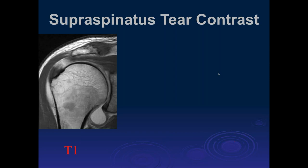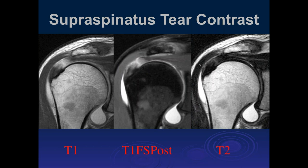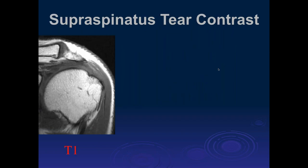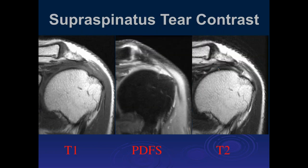Looking at the supraspinatus tendon with arthrogram injection, we can see the tear. The T2-weighted image shows the tear but is much less sensitive than the PD fat sat. If you do arthrography, even the T1 lacks as good contrast for subtle tears. T2 is great for size of the defect, but for tears without fluid filling them, T2 is less sensitive. The edges of the tear are often obscured by severe tendinosis on PD fat sat images.